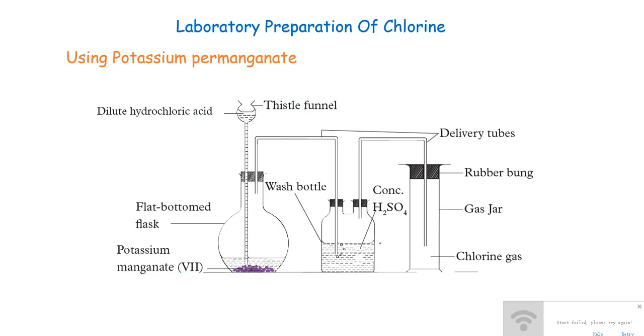But either way, we shall produce our chlorine gas, as we are going to see. So we shall need our hydrochloric acid, which is either diluted or concentrated, depending on the availability or amount of chlorine we want to produce. But we shall get our hydrochloric acid and drop it onto our potassium manganate 7. So we have hydrochloric acid, and it's going to react with potassium manganate 7, which is a solid, this purple solid here.